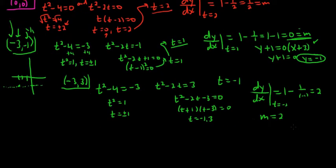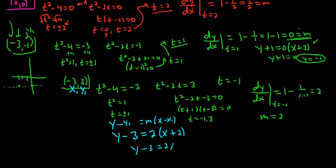And then to finish, we would use our formula. So it's y minus 3 equals 2 times x plus 3, because it's y minus y1 equals m times x minus x1. So you get y minus 3 equals 2x plus 6. Add the 3, so you get y equals 2x plus 9.